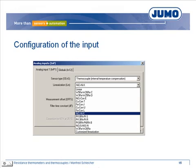You just have to select the sensor type thermocouple and the corresponding linearization for the input. The field device calculates the temperature of the thermocouple using the voltage of the thermocouple, the reference temperature, and the defined linearization.